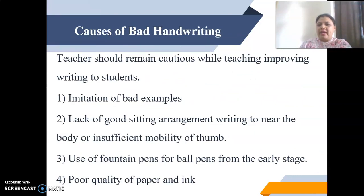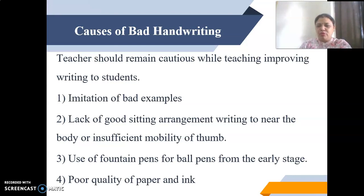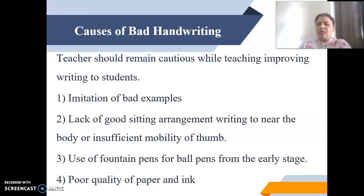Now, what are the causes of bad handwriting? Teachers should remain cautious while teaching writing to students. Imitation of bad examples is a very common cause — if the teacher or parents at home are not good at handwriting, students will imitate the same. Lack of good sitting arrangement, writing too near the body, or insufficient mobility of the thumb is also a significant reason. If the desk or bench is not at a proper height for the student, that also causes bad handwriting.